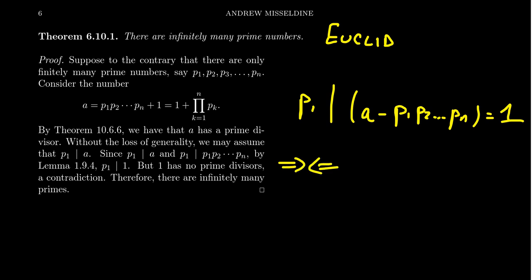One cannot have a prime divisor and also not have a prime divisor — that's the contradiction we were looking for. Because we contradicted our original hypothesis that there are finitely many primes, the negation must be true. Therefore, there are infinitely many primes. It's a very nice proof by contradiction. There exist dozens of proofs showing there are infinitely many primes, but Euclid's proof by contradiction is probably the simplest.